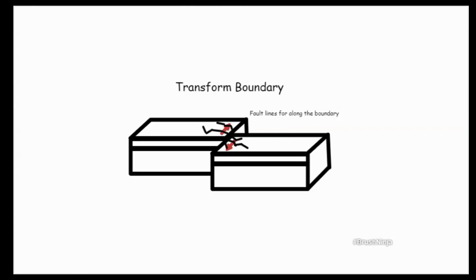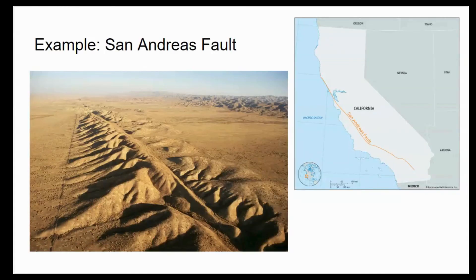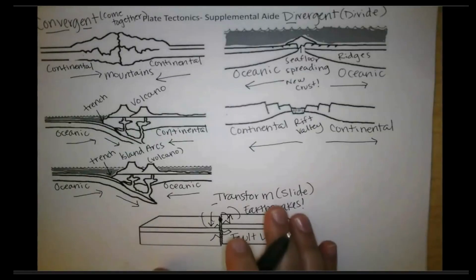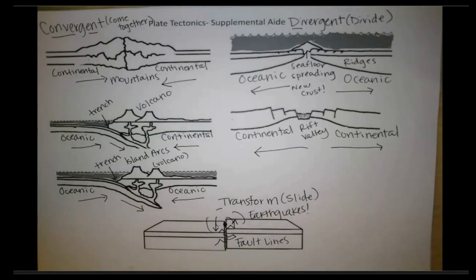A very common example that exists in our country is the San Andreas Fault in California. It runs along the western side of California and down most of the state. It creates big cracks in the ground and causes a lot of earthquakes — Southern California has a lot of earthquakes. I hope you were able to get all the information and write everything down. If you missed anything, you can pause it here. I hope you understand all the crustal features you need to remember with the supplemental aid.